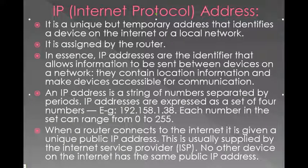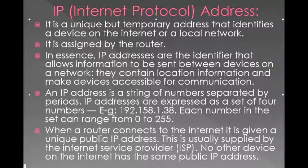When a router connects to the internet, it is given a unique public IP address, usually supplied by the Internet Service Provider or ISP. No other device on the internet has the same public IP address. When your computer or phone connects to a network, it sends its MAC address and the ISP's server issues it an IP address. That IP address is unique at that given moment — no other device is using it. Every time you connect to your router or the internet, your IP address changes, which is why it is known as a temporary address.